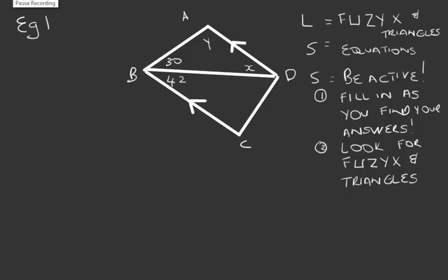Let's look at this figure and then let's also look at our laws, our skills and our strategies. We know that we need to look for fuzzy X and we need to look for triangles. What skills do we need? We need to be able to solve equations and then strategies.